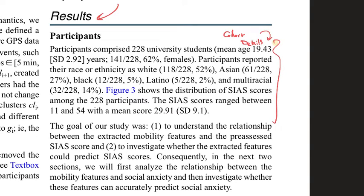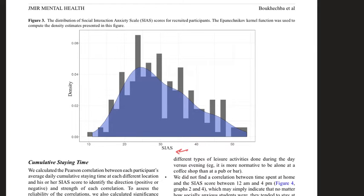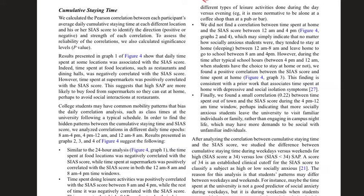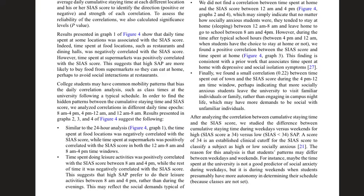In the results section, the authors present cohort details and the SIAS score distribution. They then investigate correlations for each feature category, starting with cumulative staying time. For instance, time spent in food locations such as restaurants was negatively correlated with social anxiety, while time spent at supermarkets was positively correlated, suggesting that socially anxious individuals tend to buy food from supermarkets to eat at home and avoid social interactions like restaurants.